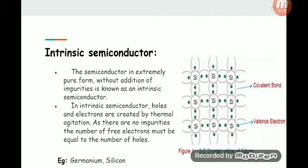Intrinsic semiconductor: The semiconductor in extremely pure form without addition of impurities is known as intrinsic semiconductor. In intrinsic semiconductor, holes and electrons are created by thermal agitation. As there are no impurities, the number of free electrons must equal the number of holes. Examples: germanium, silicon.